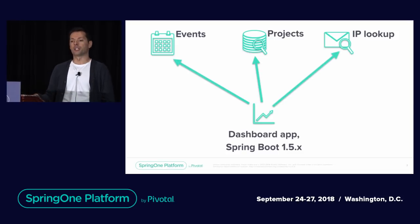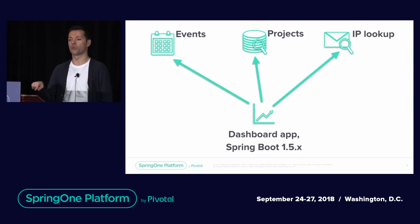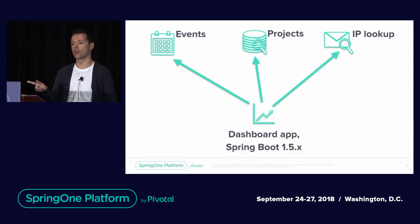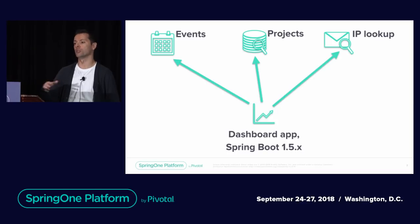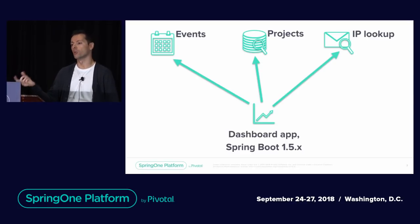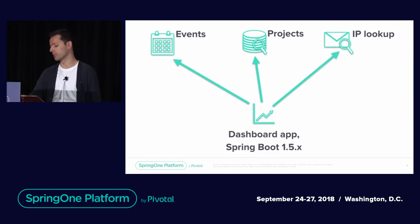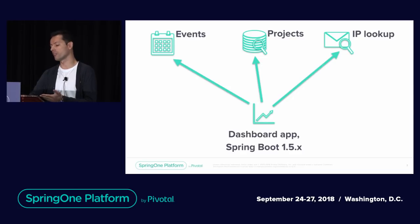Our existing application — which is the starting point for this presentation — is a Spring Boot 1.5 application that looks into that index through REST calls. It's also using two other web APIs: one is listing calendar events for a certain period, and another remote service is doing reverse DNS — a way for us to see if certain IPs are abusing the start.spring.io service.